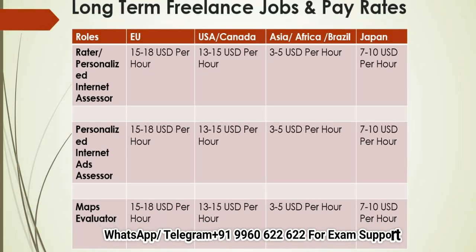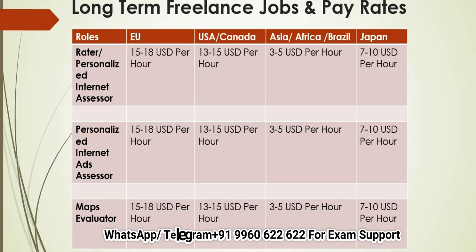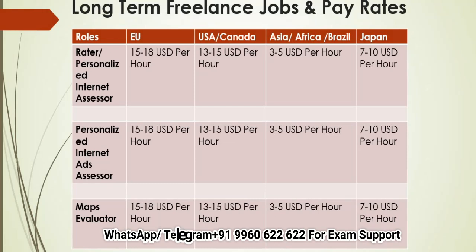On the screen you can see the rates for different countries and regions. The second job is Ads Assessor and the third one is Maps Evaluator. If you see the rates, they are nearly the same across the jobs, but the basic difference is that in a Rater job the rate is purely hourly, while in Ads and Maps it is on a task basis. On average, it comes to the same rate. Here you can see the rates for different regions and countries, and when you make the application you can clearly see the rate for your particular location.